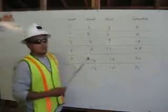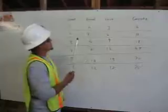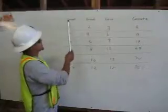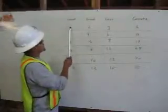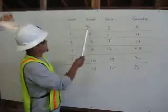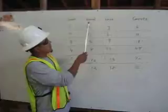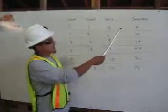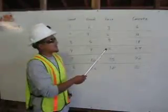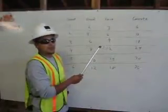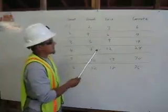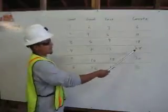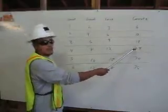If we're using cubic yards, you would need one cubic yard of cement, two cubic yards of gravel, and three cubic yards of sand. That would give us six cubic yards of concrete. If we needed more than six — for instance, 24 cubic yards —